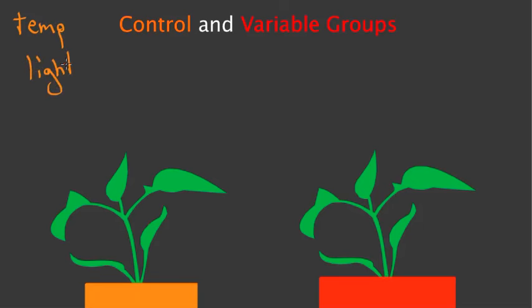But there'll be one difference, and that is called a variable. And so this plant over here would be the variable group, and this plant over here will be the control group.